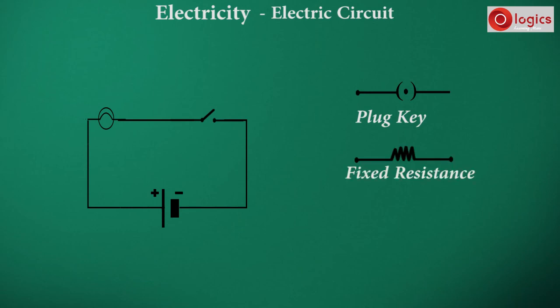Fixed resistance: flow of current in a circuit will have some resistance. Such resistance is represented by a zigzag line.